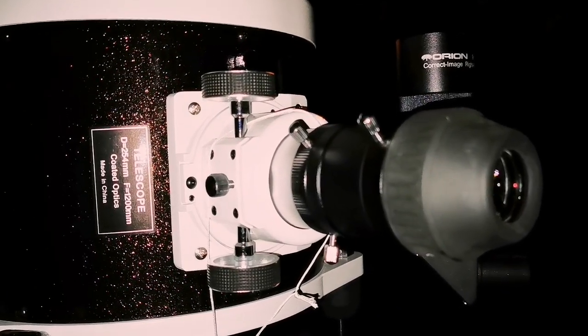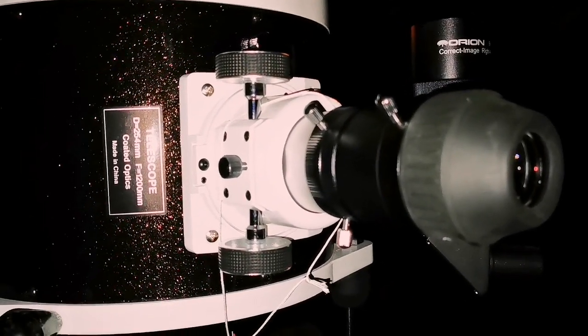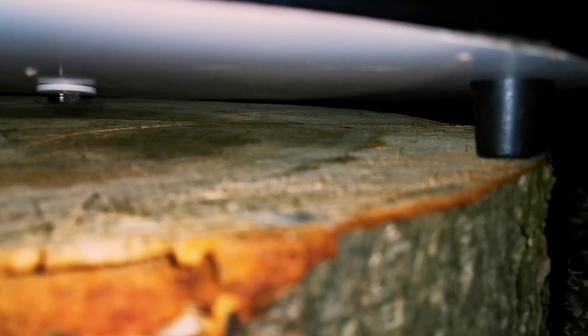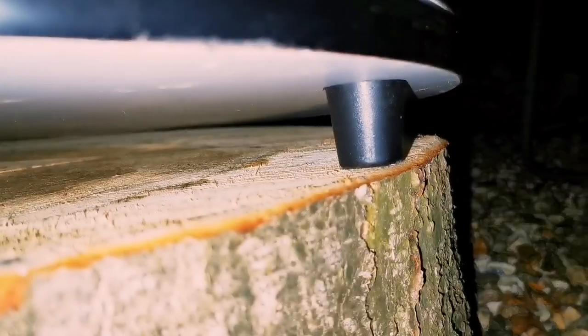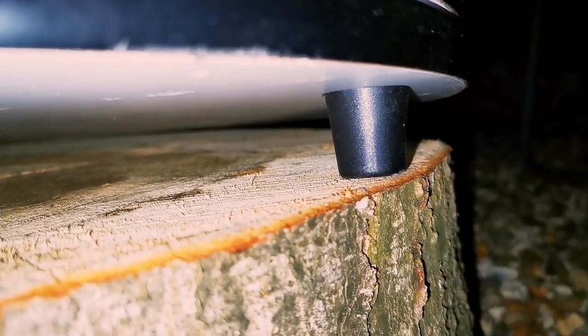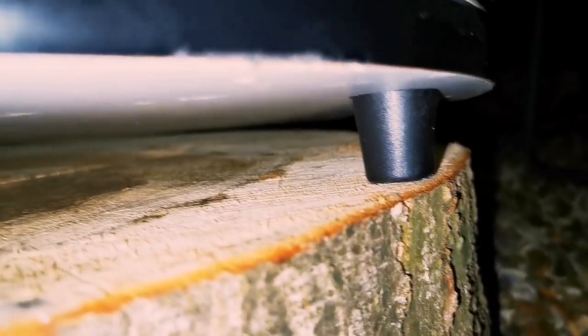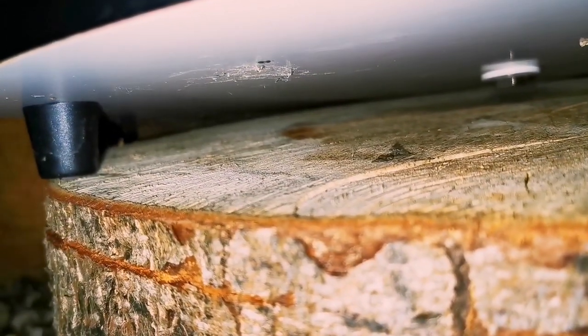Either way, 10 inches is a good size, but the height of it is not enough for you as a Dobsonian. So you have to add something underneath. In this case, I've added this log as you can see here. The legs of the mount, or rocker box as they say, is right on the edge as you can see here.